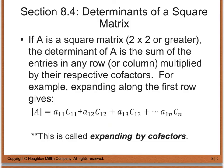We don't always have to find minors and cofactors for every term in a matrix. When calculating a determinant of a 2 by 2 or greater, the determinant of A is the sum of the entries in any row or column multiplied by their respective cofactors. This process is called expanding by cofactors, and we'll look at an example coming up next.